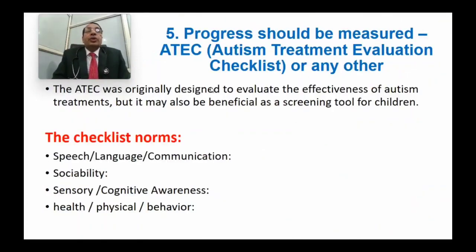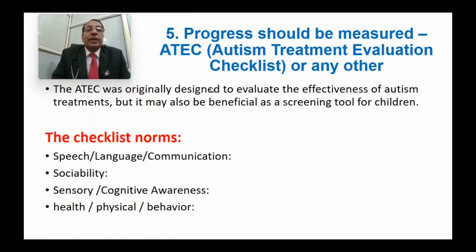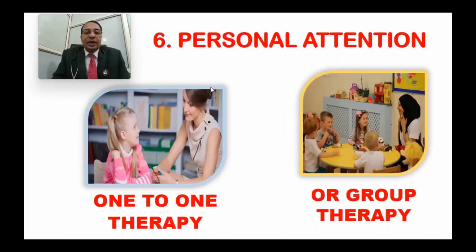Next, progress of a child should be measured at definite intervals, preferably every 3 months. It may use the ATEC — Autism Treatment Evaluation Checklist — which was originally designed to evaluate the effectiveness of autism treatment but can also be used as a screening tool. The checklist has 4 components: speech, language and communication; socialization; sensory and cognitive awareness; and health, physical and behavioral issues.